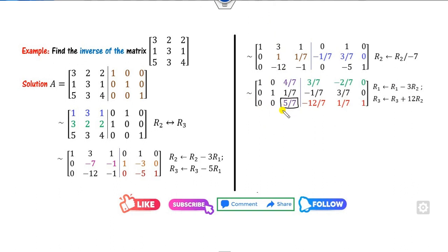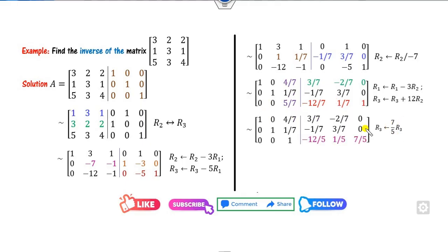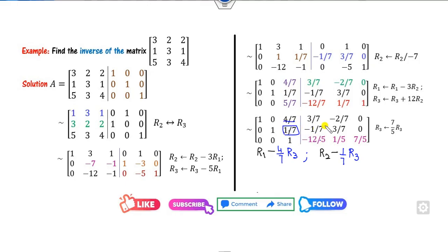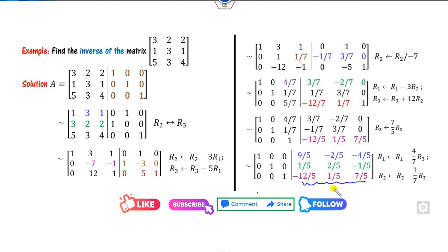The next step is to make the third diagonal element equal to 1. Divide R3 by 5/7, which means multiplying R3 by 7/5. Then the last step is to make the elements above the third pivot zero using operations R1 and R2 with appropriate multiples of R3. Apply those operations equally to both sides. You will get the identity matrix on the left. This right-hand matrix is my A inverse.